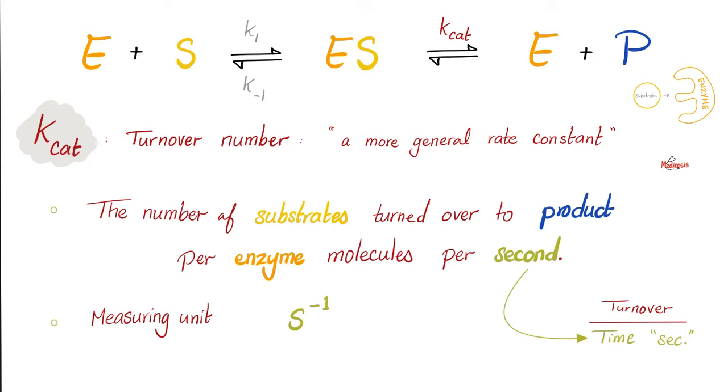Because the substrate has been turned over into products, turned over at a rate of what? At a rate of K-cat. Any rate in the world is something over time. The rate of turnover is turnover over time. That's why K-cat is measured in something over seconds.